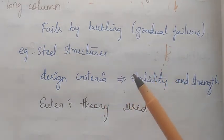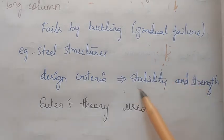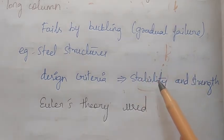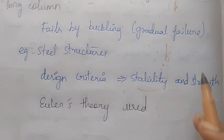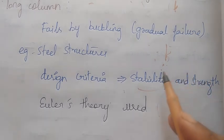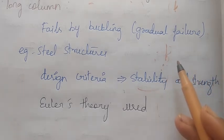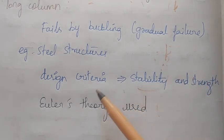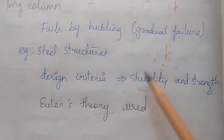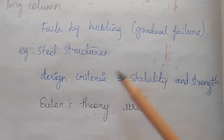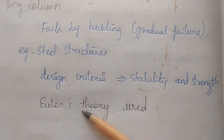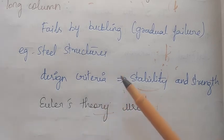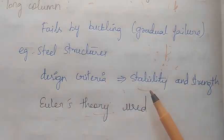Design criteria: we are talking about the factor of safety and stability. Stability and strength are the two criteria. For the short column we use Rankine's Theory; for the long column we use Euler's formula. The buckling effect governs the long column, using effective length and radius of gyration. The formulas are the same across similar question types.